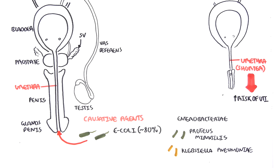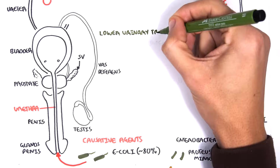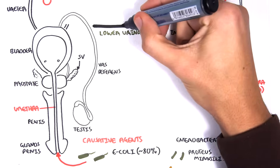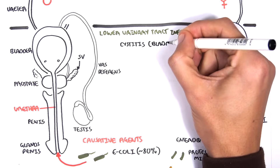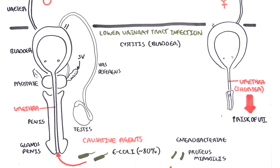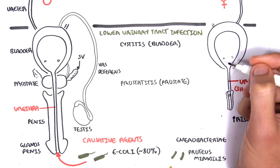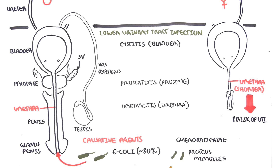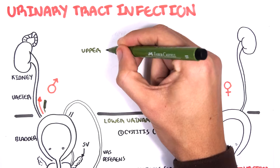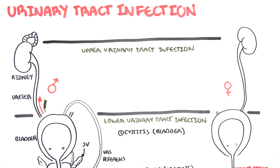The bacteria will usually cause a lower UTI, which can be either cystitis, infection of the bladder; prostatitis, infection of the prostate gland; or urethritis, infection of the urethra. Infection of the lower urinary tract can progress and cause an upper urinary tract infection, where infection affects the kidneys. This is called pyelonephritis, which is serious and can cause acute renal failure.